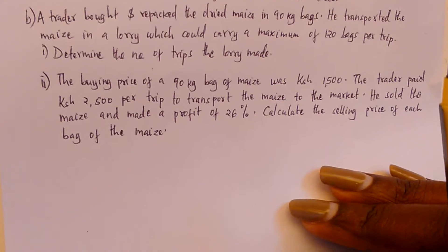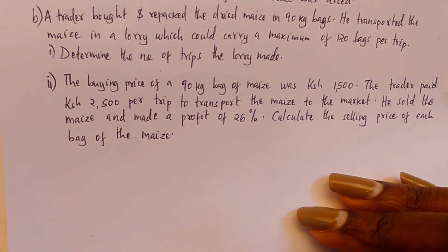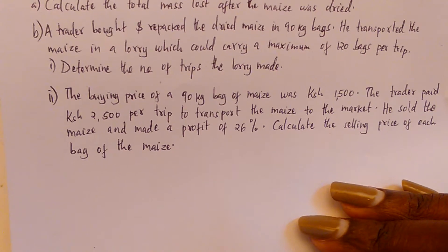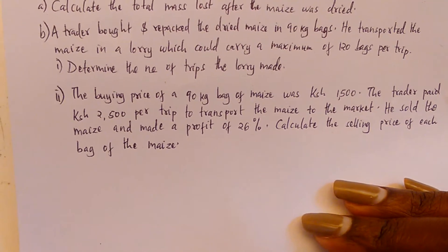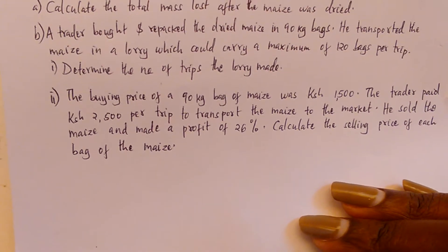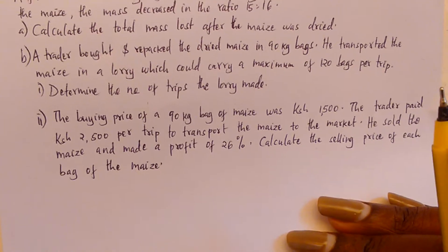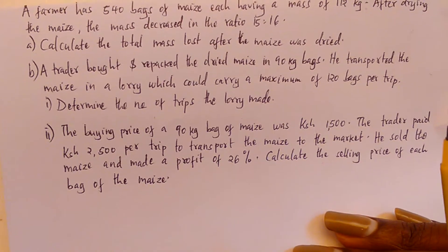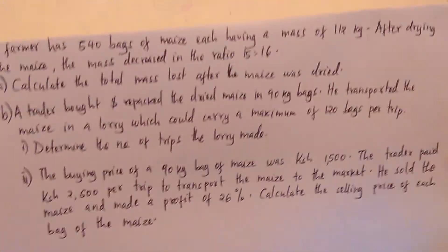Part C: The buying price of a 90 kg bag of maize was Ksh 1,500. The trader paid Ksh 2,500 per trip to transport the maize to the market. He sold the maize and made a profit of 26%. Calculate the selling price of each bag of maize.